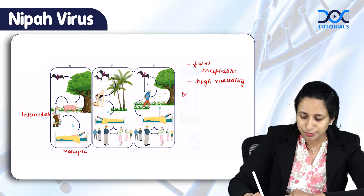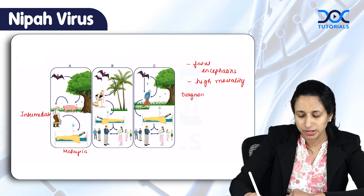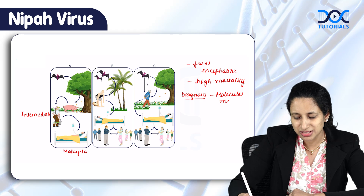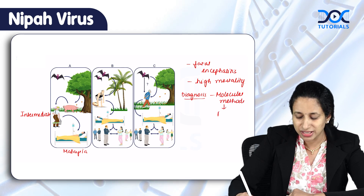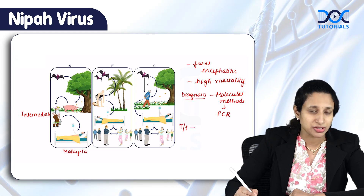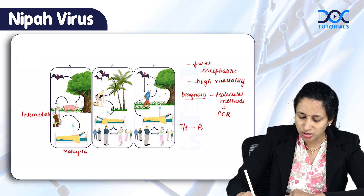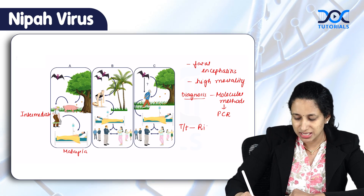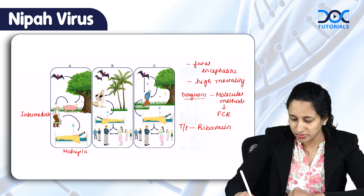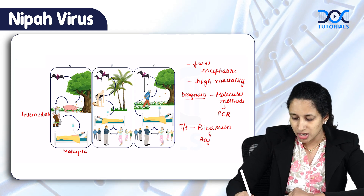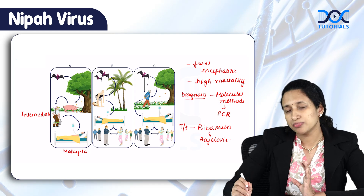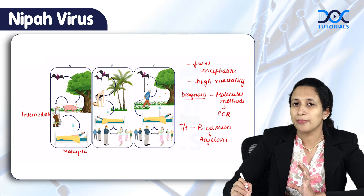When it comes to diagnosis, it basically relies highly on molecular methods. In cases of high clinical suspicion, molecular methods — that is PCR — is the best modality for diagnostics. Coming to treatment, there are very limited options available. One drug which has shown some promise is ribavirin. Ribavirin is considered to be effective along with acyclovir, and this was first used for treatment during an outbreak. These are the five important points to remember about Nipah virus.